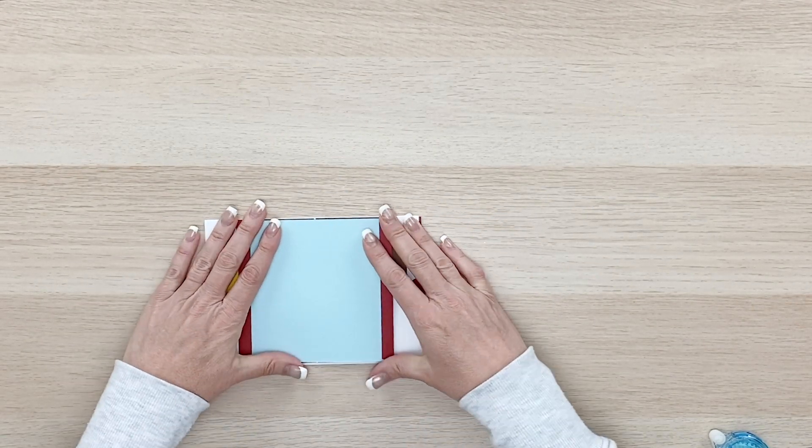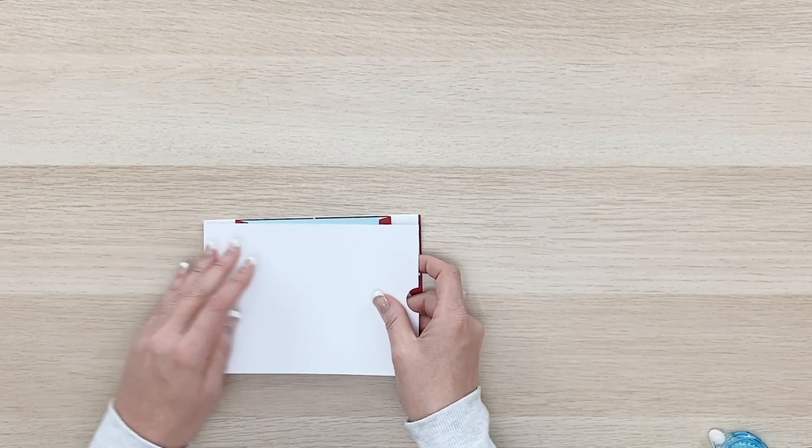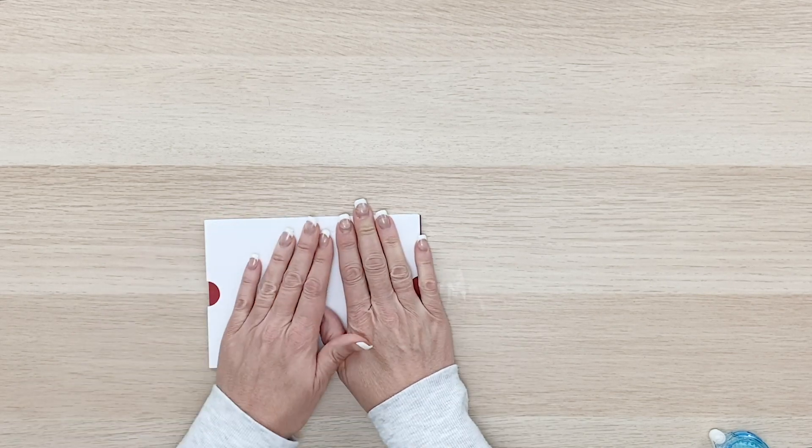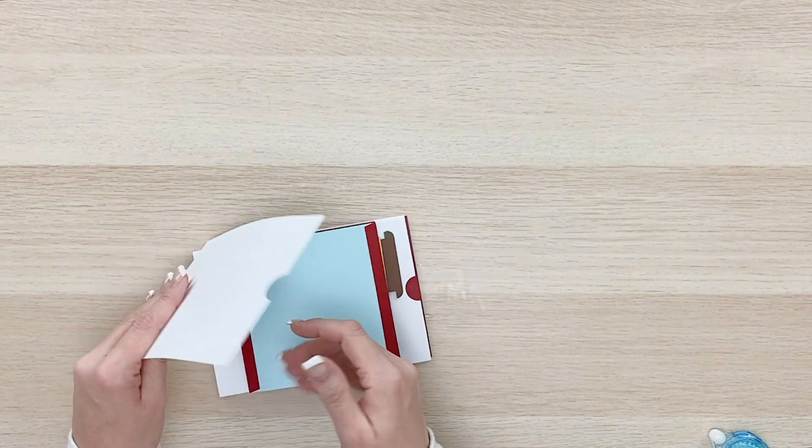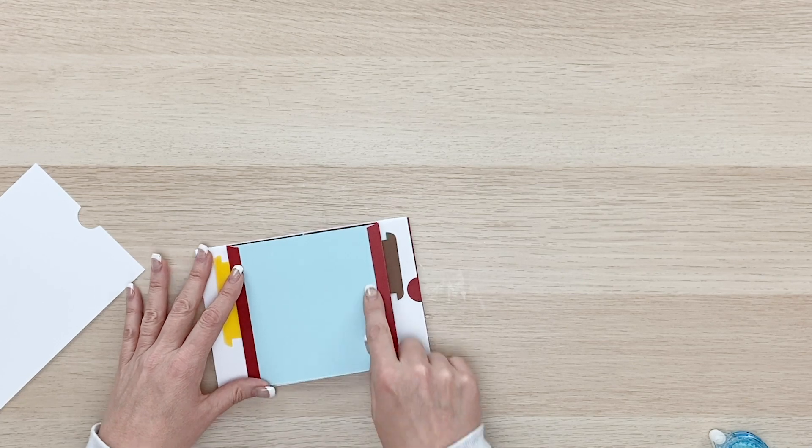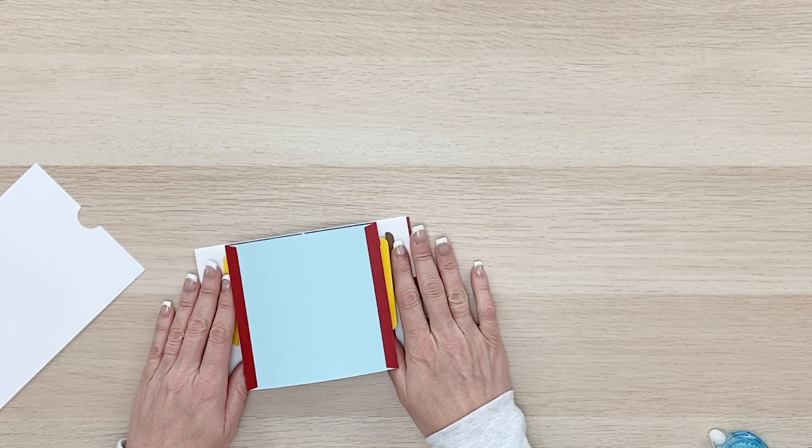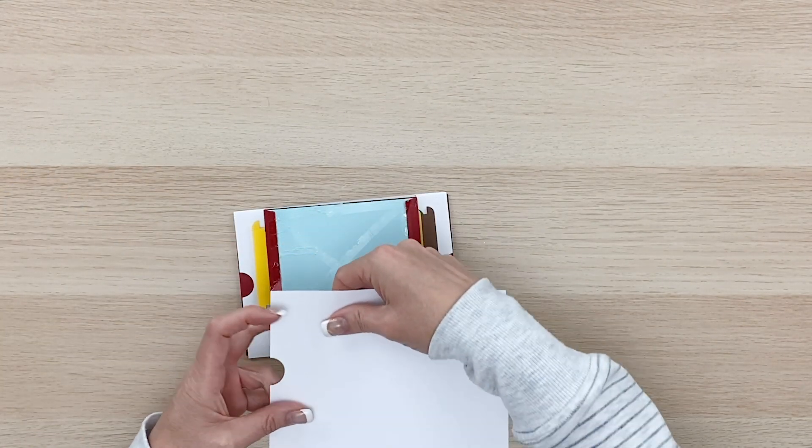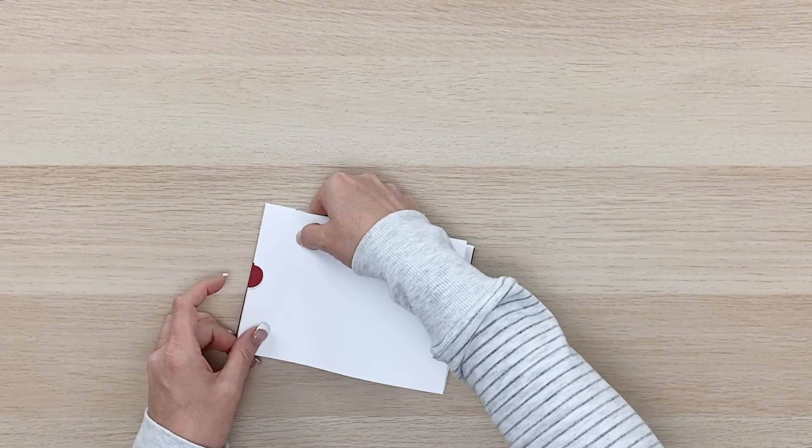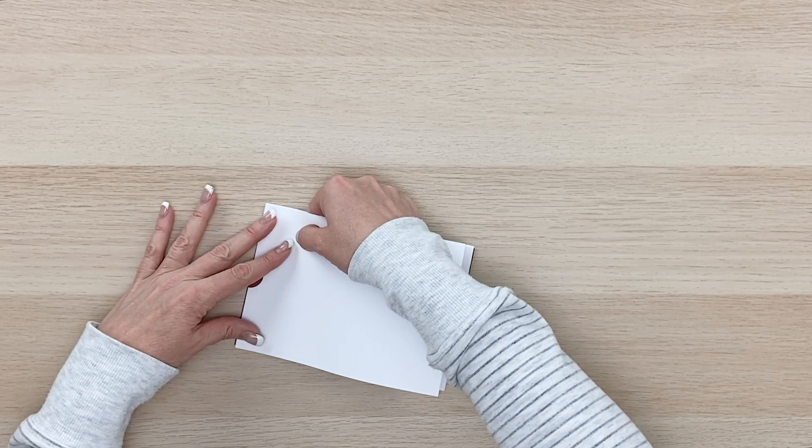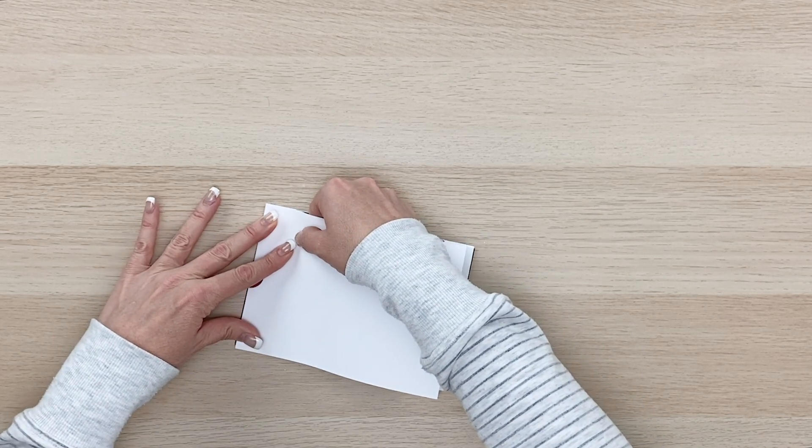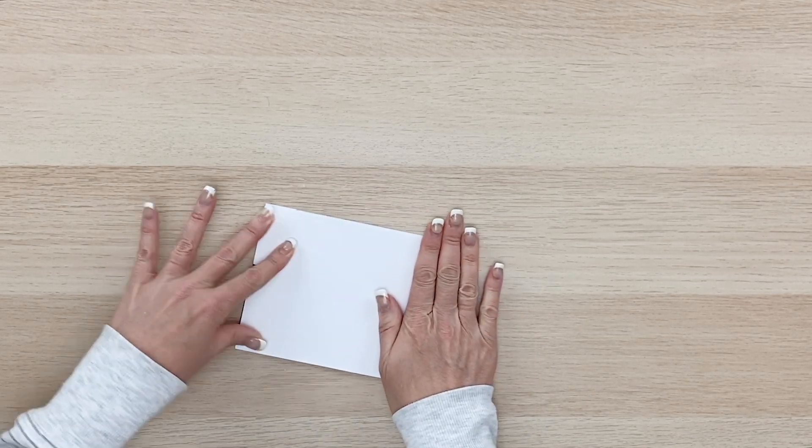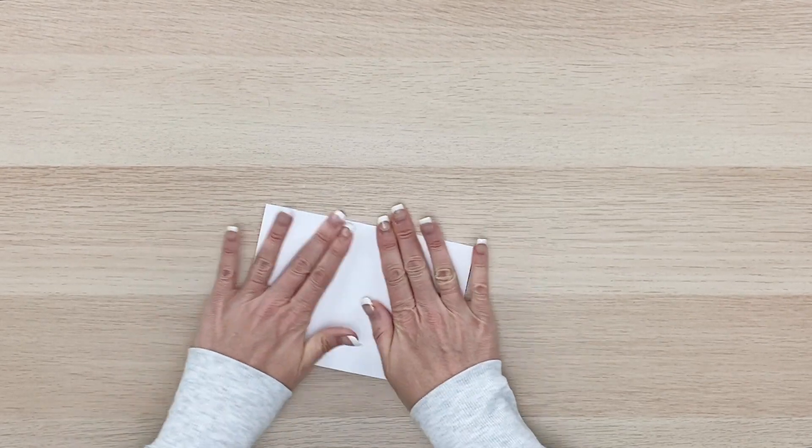So now we're just going to close our little card up and our back is going to go on. And you're going to want to line it up with the front so that your card is a 5x7 when you're done. And you're just going to adhere it across this blue and red area. Don't make sure you don't get any adhesive on these little sliding tabs. So you're just going to line this up with the white front piece so that it looks like a nice 5x7 when you're all done. It all lines up together.